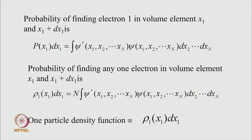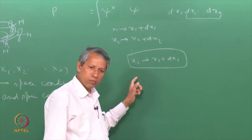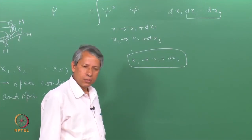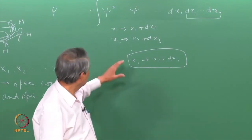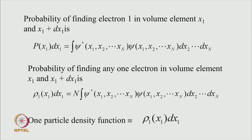From this I can ask: what is the probability in this volume not just for electron 1, but for any electron? Since there are n electrons, any one of electrons 1 to n can appear there. So the probability of finding any one electron in volume element x_1 to x_1 + dx_1 is n times that value, and we call this the one-particle density function, written as rho_1(x_1) dx_1. This gives the density function for any electron in that volume element.